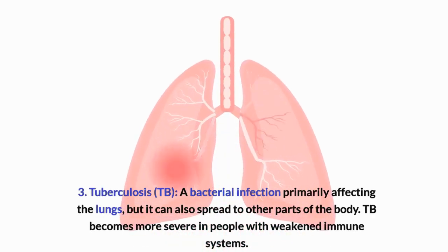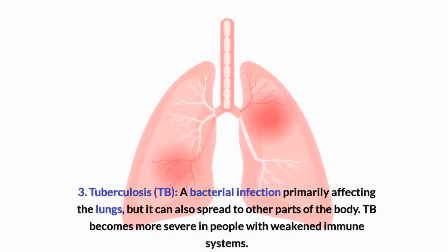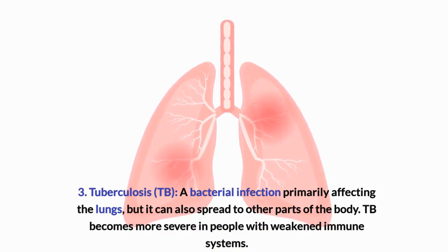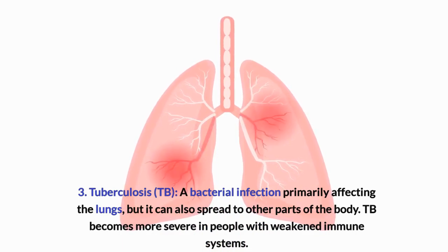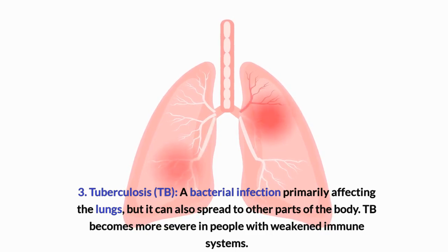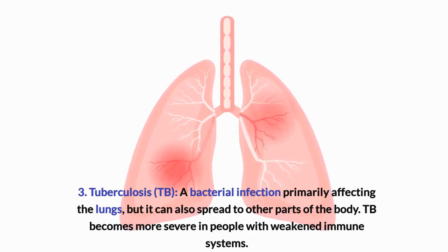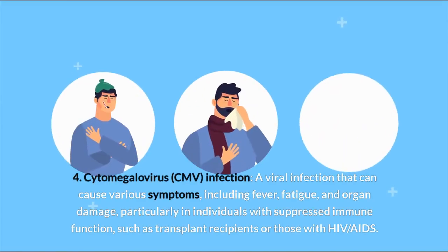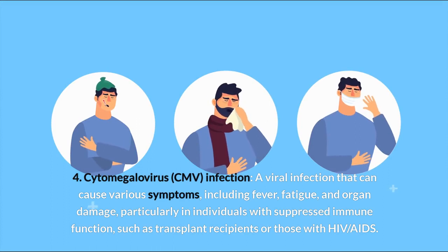Third, Tuberculosis (TB): a bacterial infection primarily affecting the lungs, but it can also spread to other parts of the body. TB becomes more severe in people with weakened immune systems. Fourth, Cytomegalovirus (CMV) infection: a viral infection that can cause various symptoms, including fever, fatigue, and organ damage.